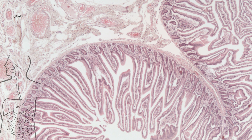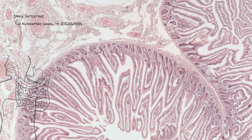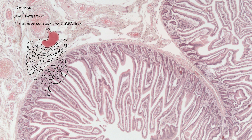The small intestine is a part of the alimentary canal where most of the digestion takes place. It is a connection between the stomach and the large intestine. The small intestine is three to five meters long and is composed of three segments: duodenum, jejunum, and ileum.